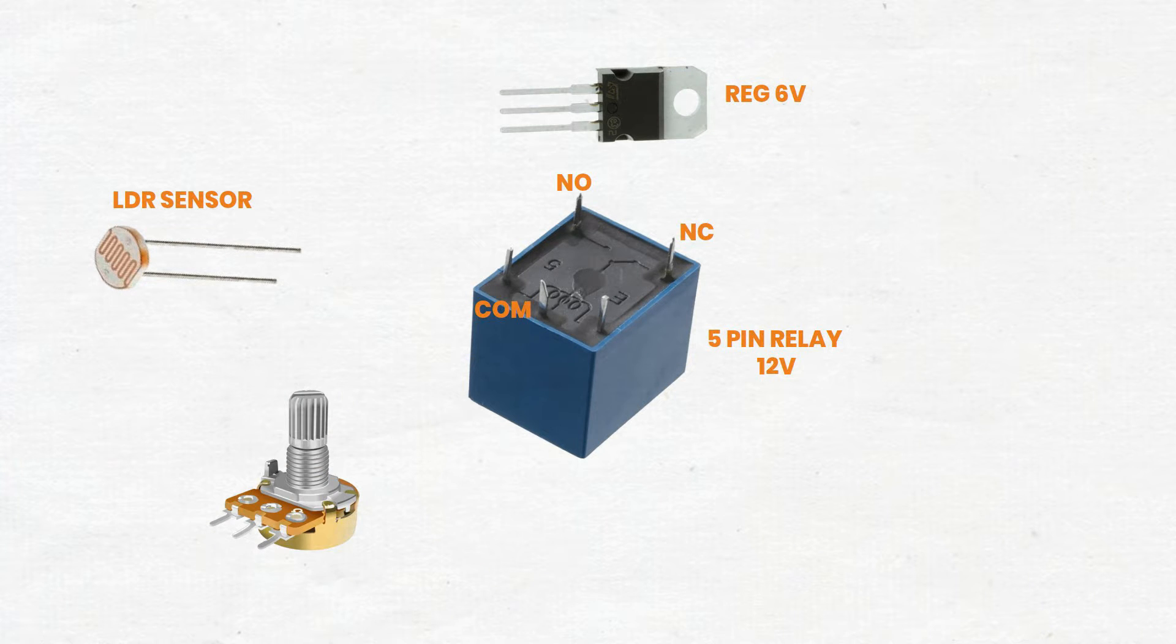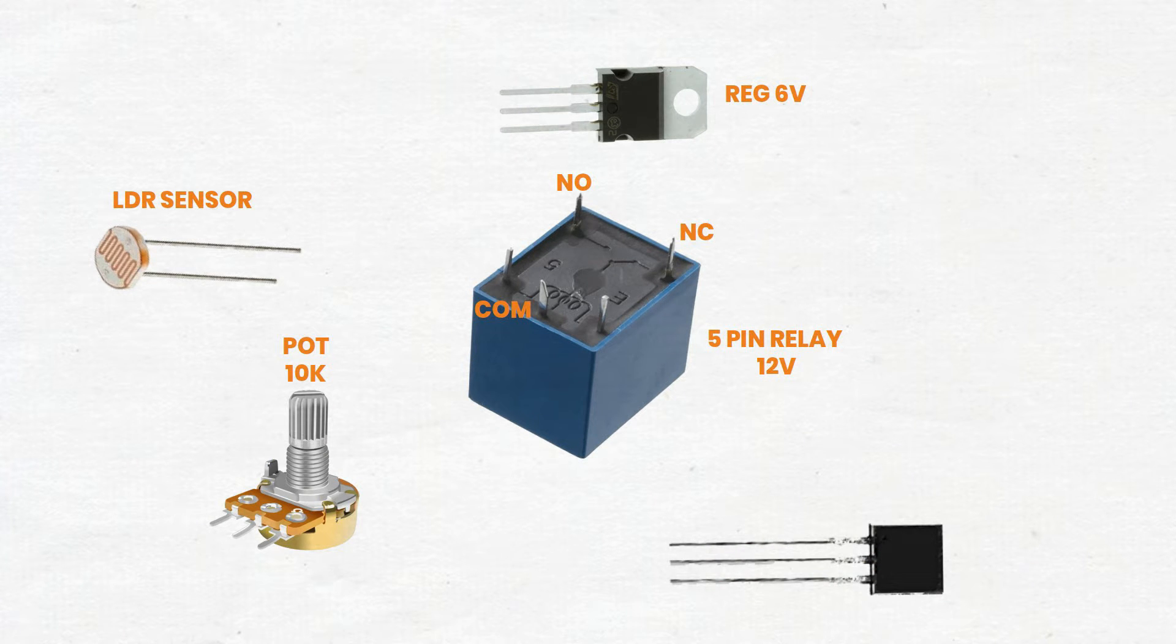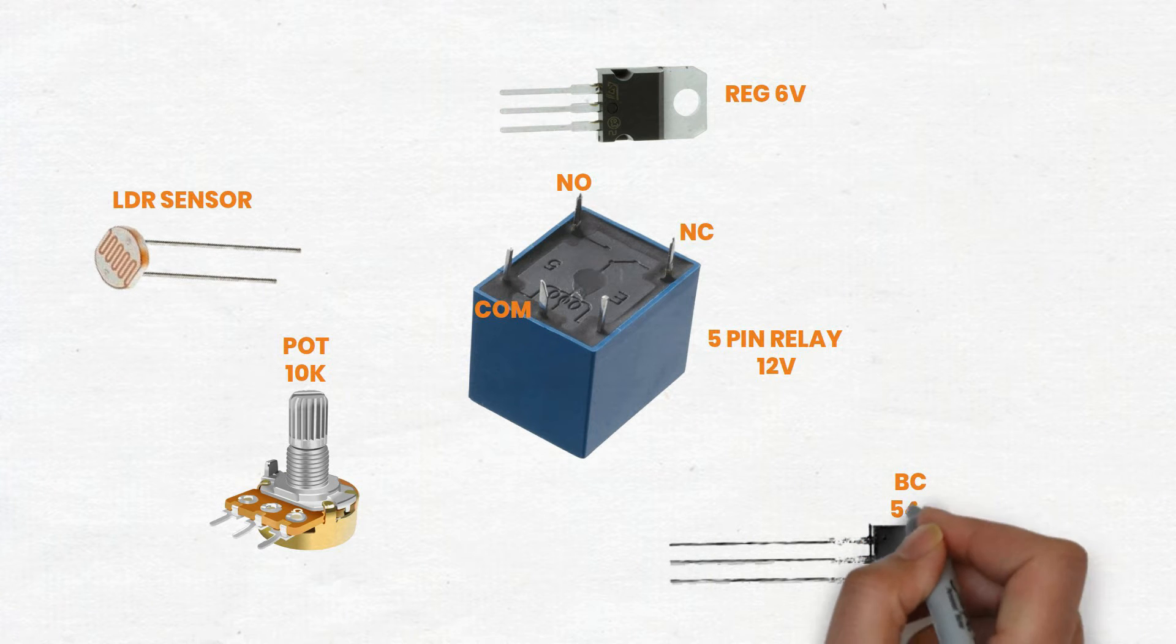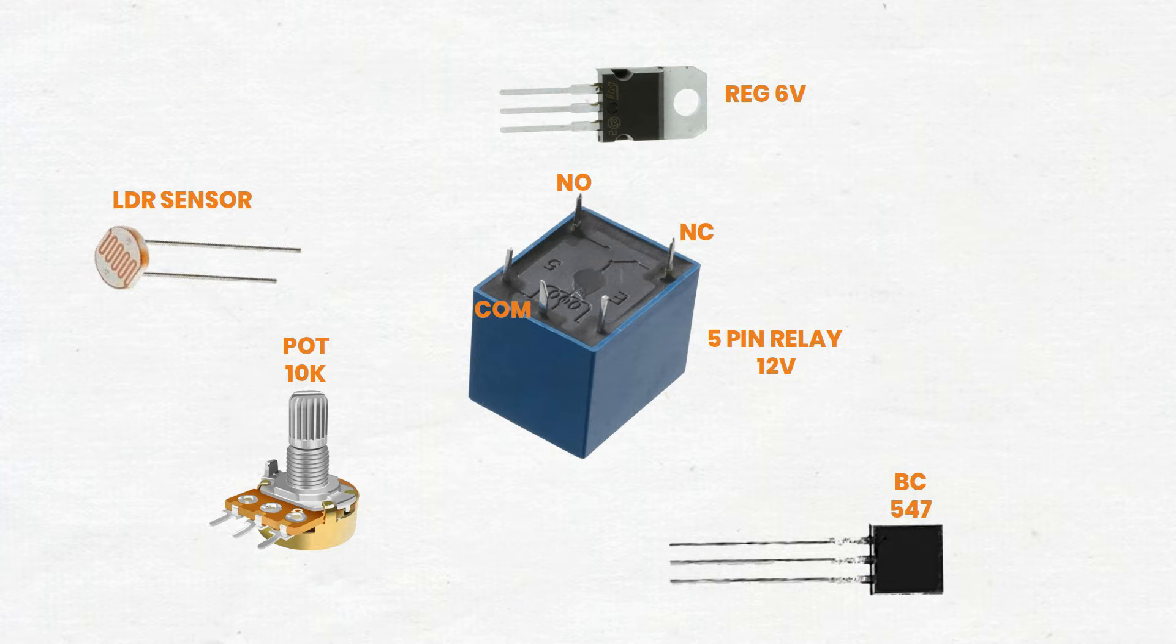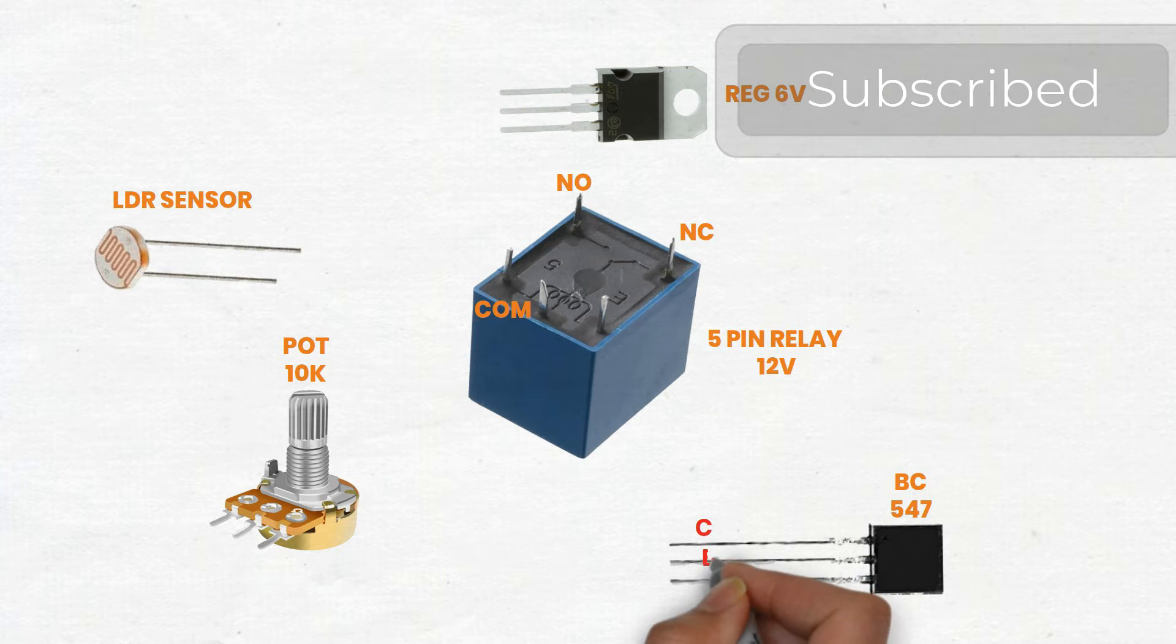By the end of this tutorial, you will understand how to create a circuit that automatically switches devices on or off based on ambient light levels, providing practical applications in various automated systems such as nightlights or smart home devices. Let's dive in and start building our LDR sensor circuit.